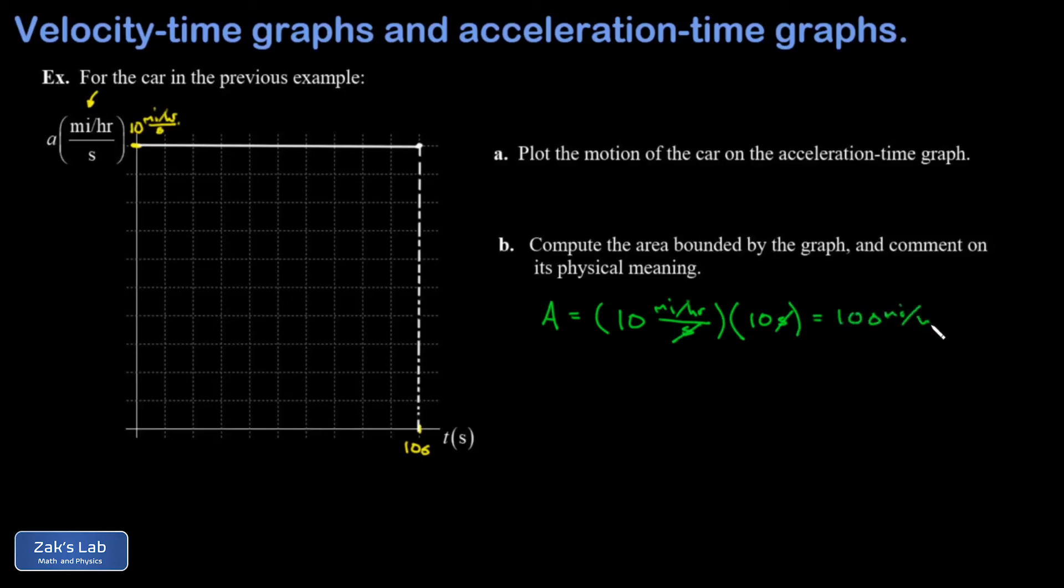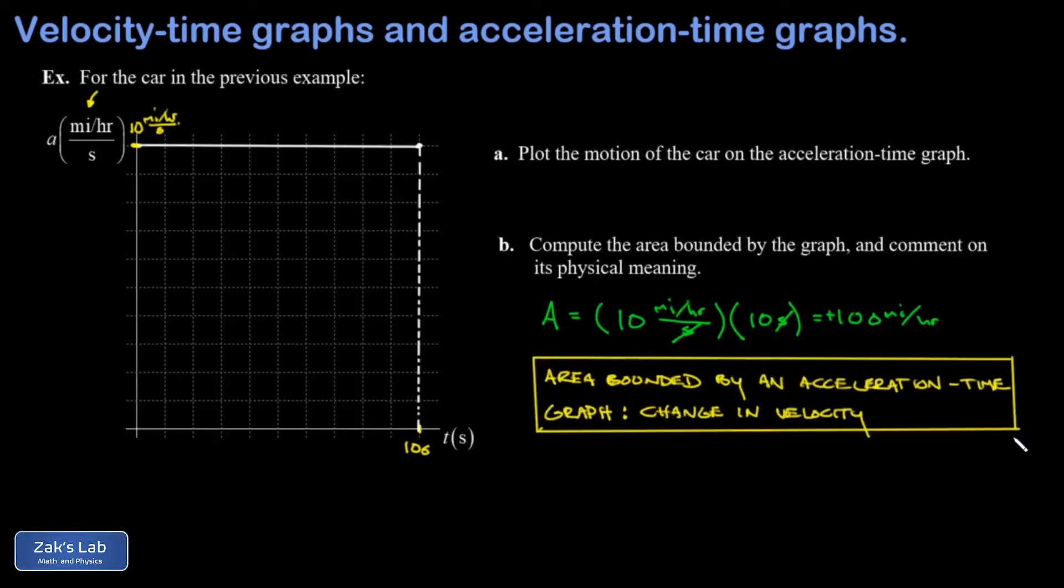And that's positive because this acceleration is above the t-axis. It's a positive acceleration. So what did that give us physically? That was the change in velocity for the car as it was accelerating. It went from 0 to 100 in 10 seconds. And this gives us our second major fact of the video. And we'll give this guy a box as well. The area bounded by an acceleration-time graph gives you the change in the velocity.